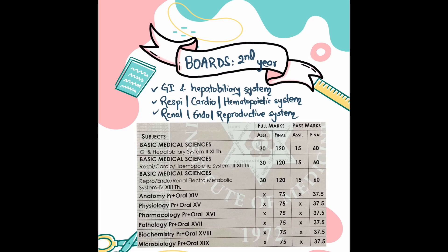Now let's talk about second year — the fear of medical students during their basic science years. In second year, there are three IBMS papers. The first covers the gastrointestinal and hepatobiliary system. The second covers respiratory, cardio, and hematopoietic systems combined. The third covers renal, endocrinology, and reproductive system combined.